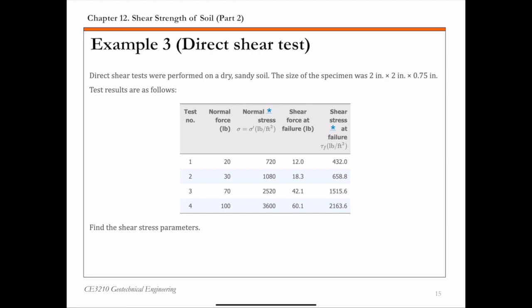Example 3 here is about the direct shear test. Direct shear tests were performed on dry sandy soil and the size of the specimen is given to you. It's 2 by 2, which is basically the cross-sectional area of the specimen, and 0.75 inch, that's the height of the specimen.